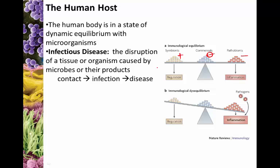When infectious disease happens, we see disruption of that balance. When individuals are sick, the balance tips in favor of the pathogens, resulting in some type of tissue damage or disruption to the overall organism — this is what we consider disease.